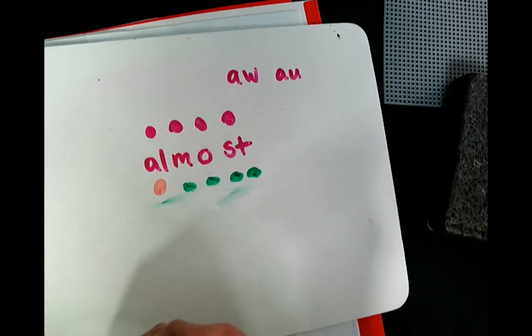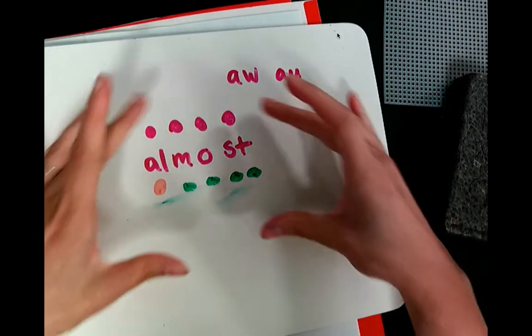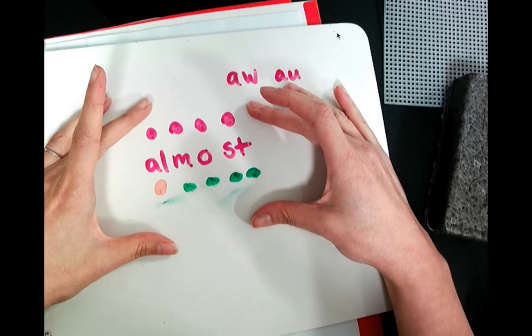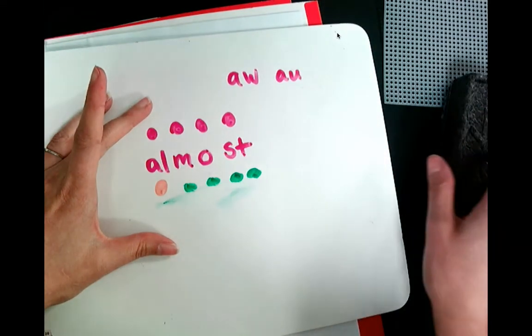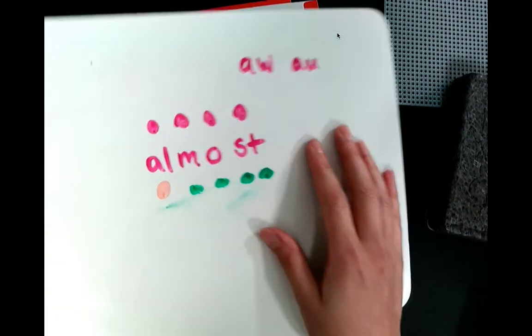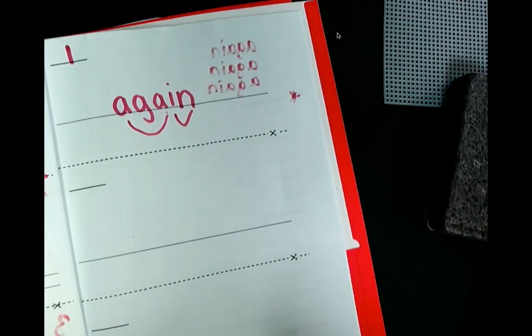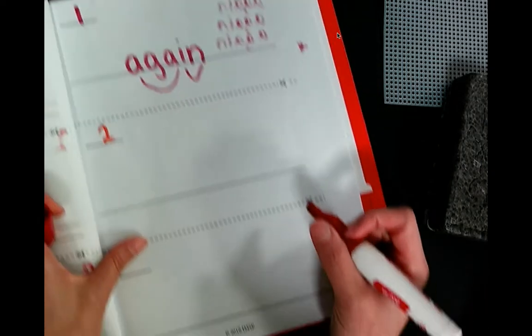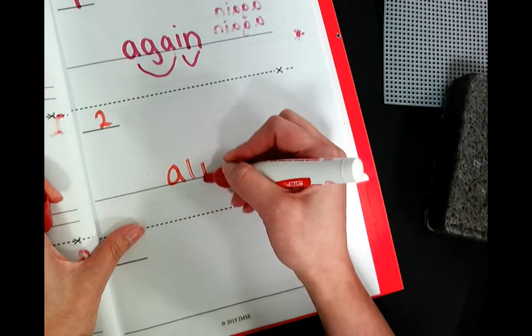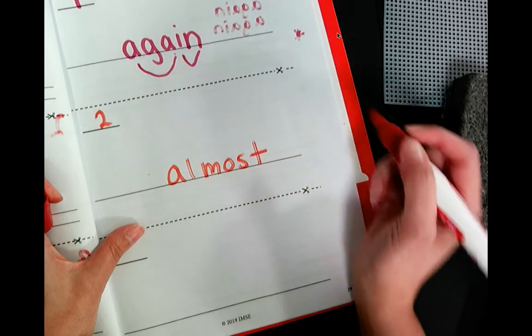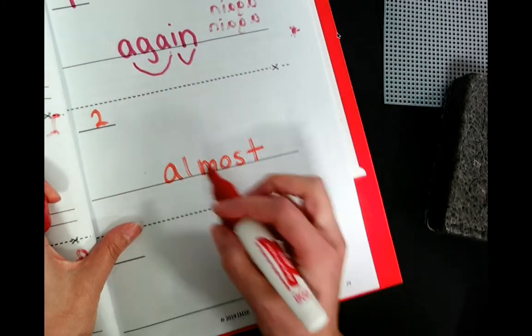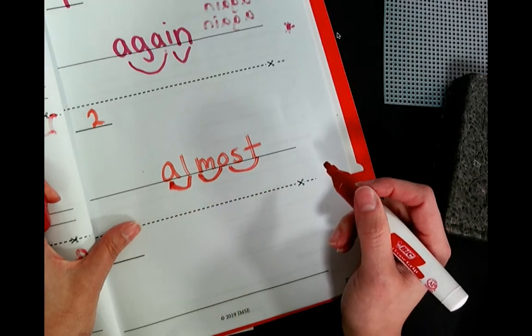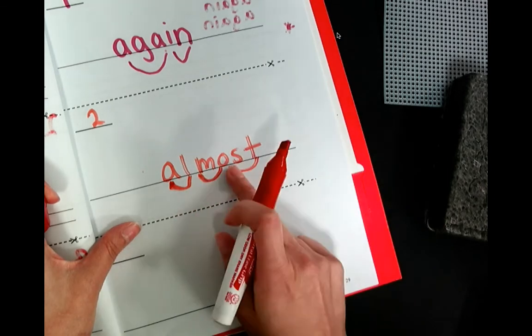So, we have another sight word here. Almost. I almost made that basketball into the hoop. Almost. Almost. Let's go ahead and write almost. Put a number two here. Almost. And write almost. Chunk it out as A, L, M, O, S, T. Almost.